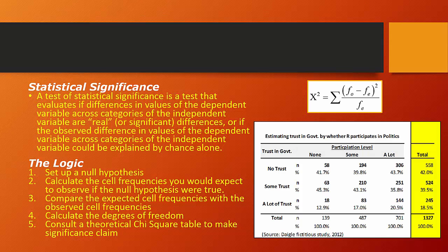A test of statistical significance is a test that evaluates if differences in the values of the dependent variable vary across the categories of the independent variable — if those differences are in fact real or significant, or if those observed differences could be explained by chance alone.